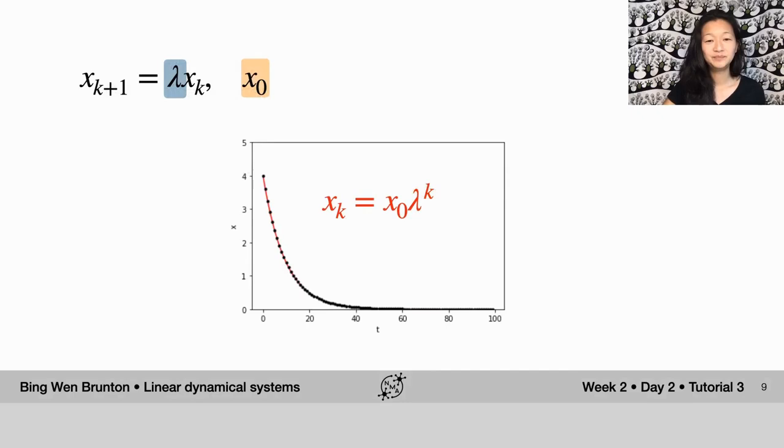So we're going to go back and just remind ourselves about the behavior of these deterministic linear dynamical systems. In this case, we have a simple one where x at k plus 1 is simply some number lambda times x at time k. And here we have an extra parameter x0, which is just the initial condition where the system started at the beginning at time 0.